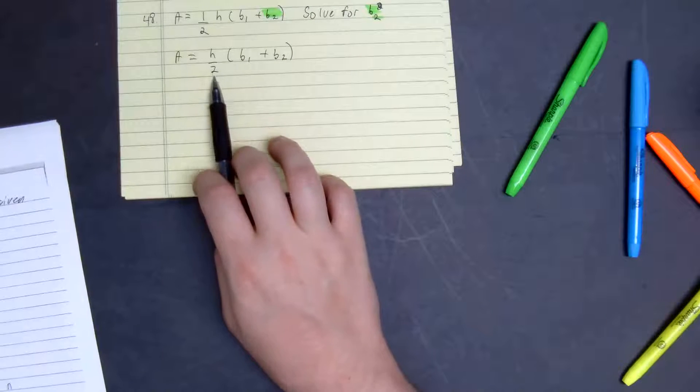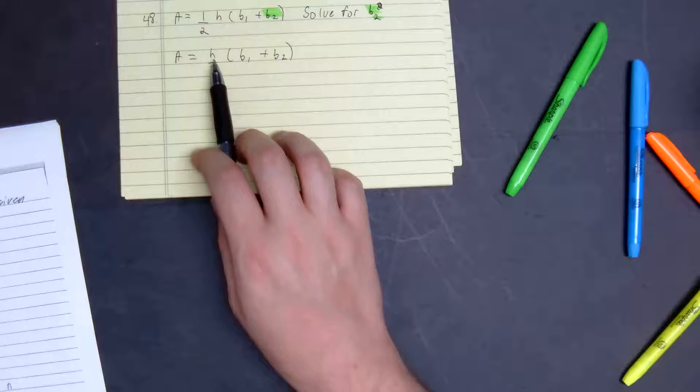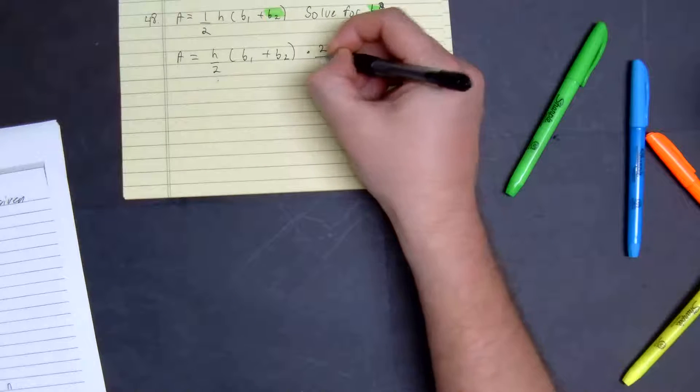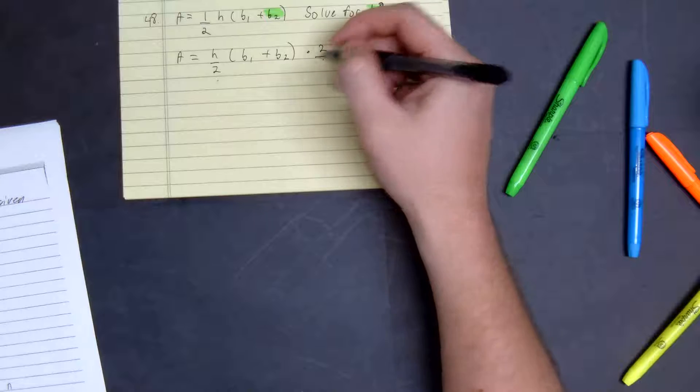Right here, I want to take the reciprocal of the height and two, so we multiply both sides by two over h.